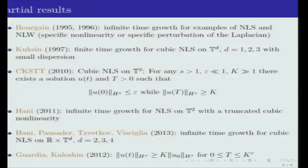Maybe let me finish this brief presentation of the Schrödinger equation with this result of Hani, Pausader, Svetkov, and Veselov, which was recently announced, but there's not yet a preprint available for it. What they claim to have proved is that they can actually prove an infinite time growth, not for NLS on the torus T^2 but on R × T^d. I don't know much about this result, but it seems that what helps them here is the fact that they have some extra decay coming from the R component.